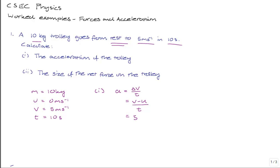V is 5, U is 0, and the time we're given is 10 seconds. So the value of acceleration is equal to 5 over 10 or 0.5 meters per second squared. So that's the answer for the first part.